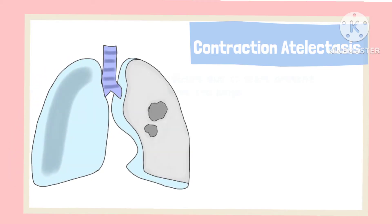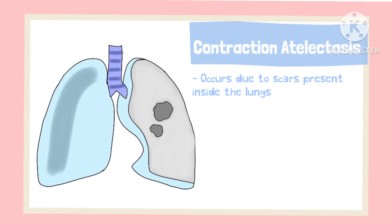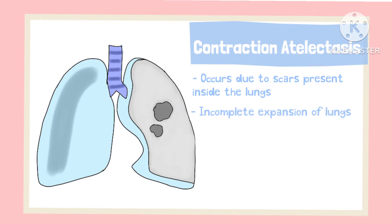Contraction atelectasis occurs as a result of scars present inside the lungs which do not allow complete expansion of the alveoli. It is like a contracture of the alveoli, which ultimately leads to the collapse of the alveoli.